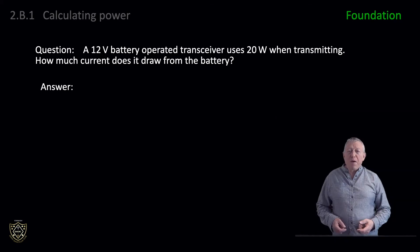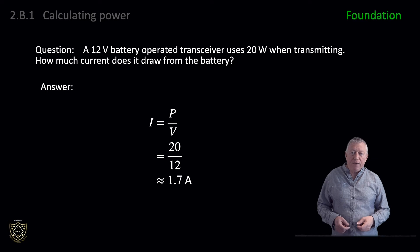Using base values, let's do a question. A 12 volt battery-operated transceiver uses 20 watts when transmitting. How much current does it draw from the battery? From the triangle, we see that I equals P divided by V, which equals 20 divided by 12, which equals approximately 1.7 amps.